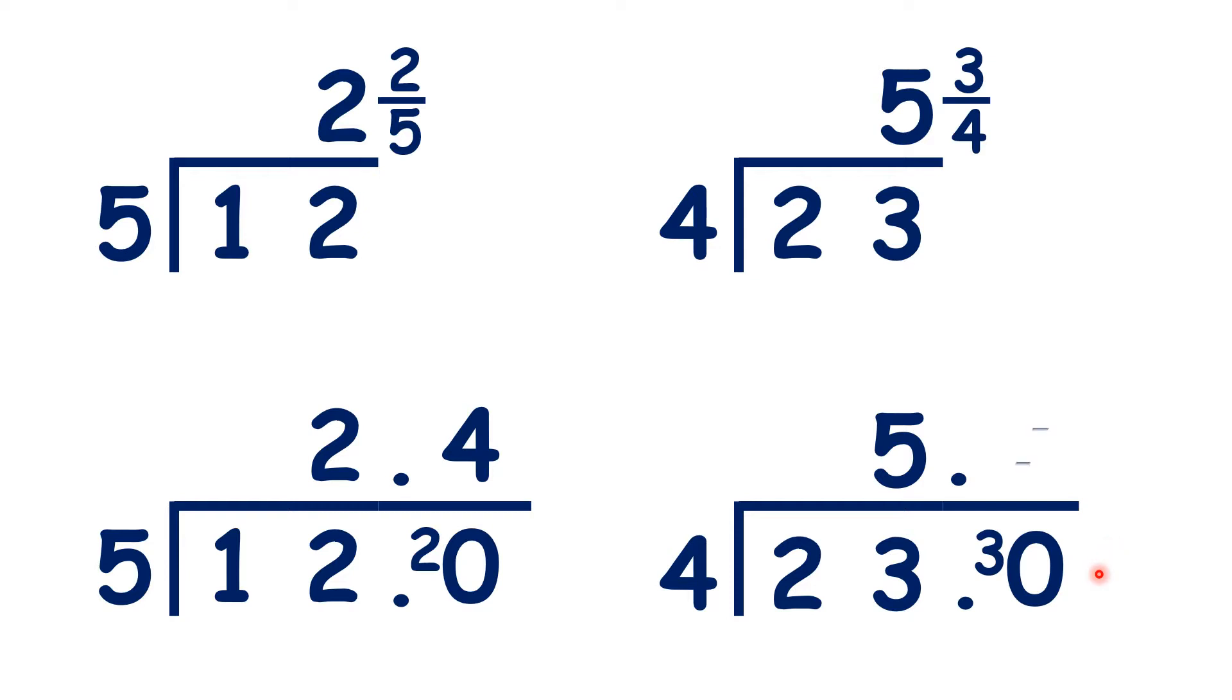So now we extend our divisor to the hundredths place by writing another 0 at the end. Now this doesn't change the number, 23.00 is still the same as 23, but now we can write our 2 remainder in the hundredths. And now 20 divided by 4 is 5, so we have our answer.